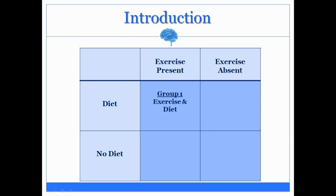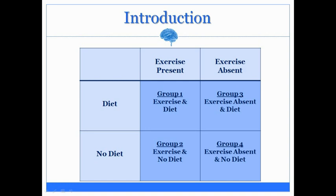Group one received exercise as well as a diet. Group two received exercise but did not diet. Group three did not exercise but had the diet. Group four did not exercise and did not diet. This gives you a nice way to visualize the experiment — the first independent variable along the top columns, the second independent variable on the rows to the left — giving us four different groups, also called four different conditions.